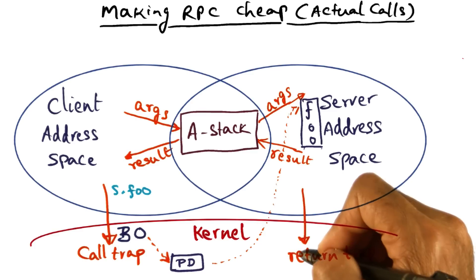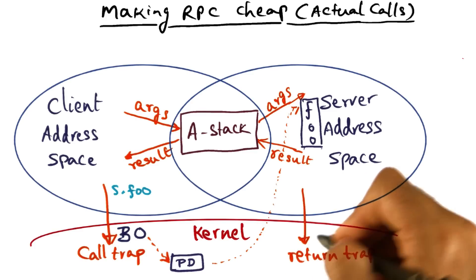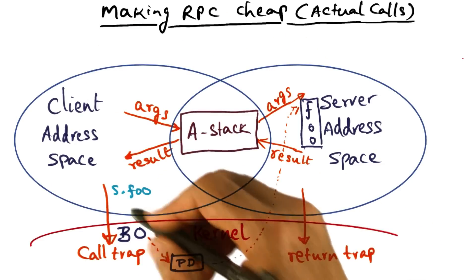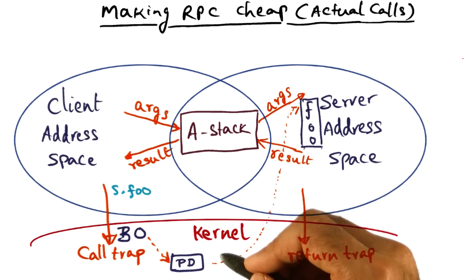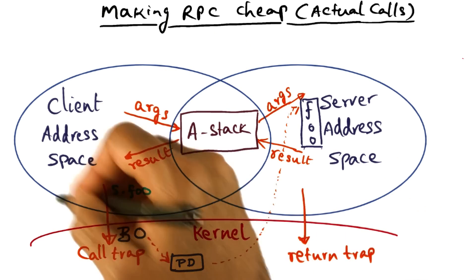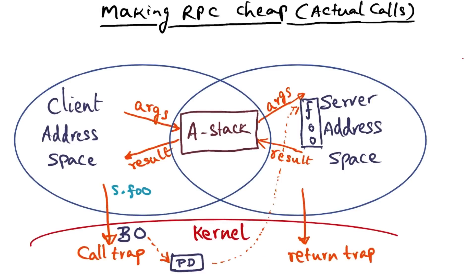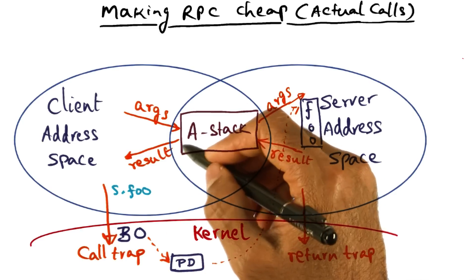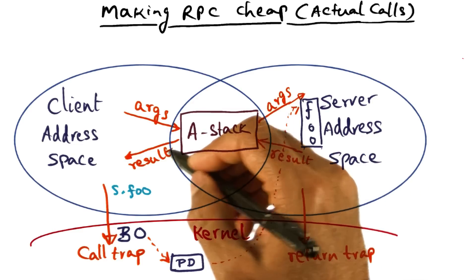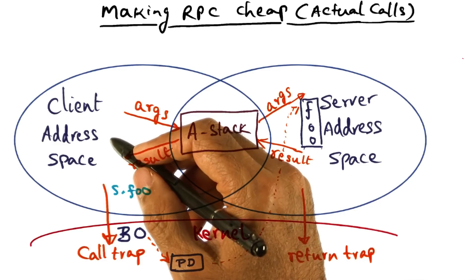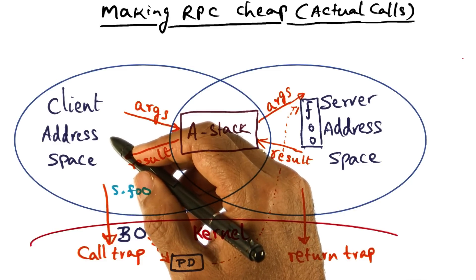At this point, what the kernel is going to do is re-doctor the thread to start executing in the client address space. It knows the return address where it has to go back in order to start executing the client code, and it knows the client's address space. So when the client thread is rescheduled to execute, the client stub gets back into action, copies the results that are sitting in the A stack into the stack of the client. Once it has done that, the client thread can continue on with its normal execution.